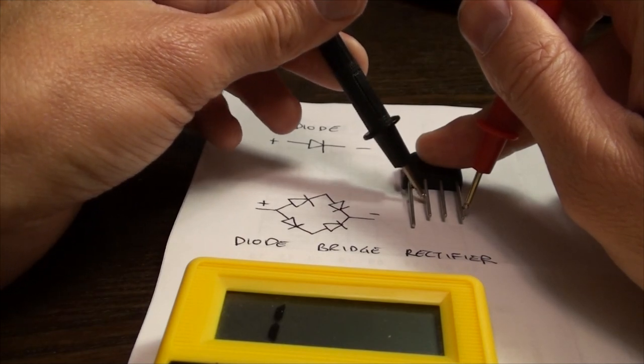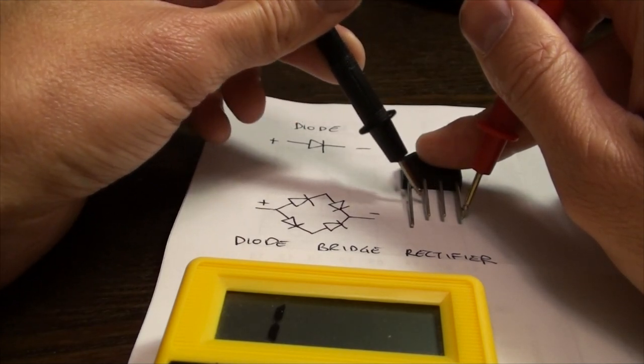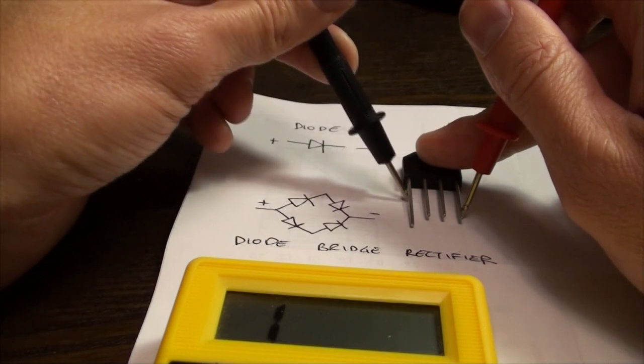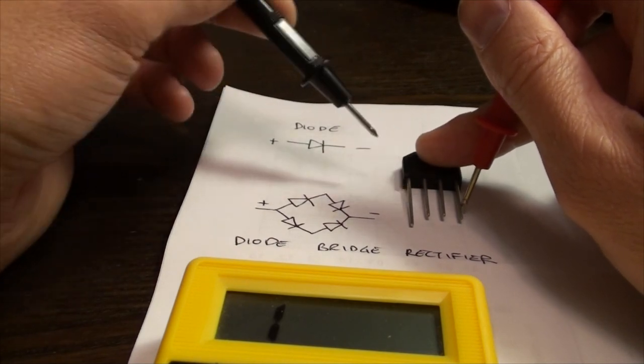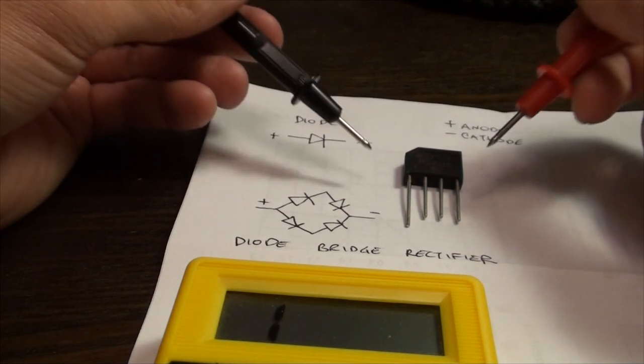Likewise, if you switch the black to either of the legs, it should give you the same reading. If these are your results, you have a functional diode bridge rectifier.